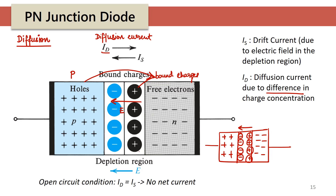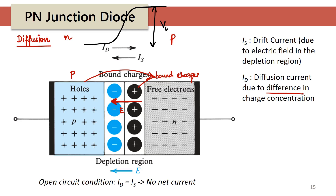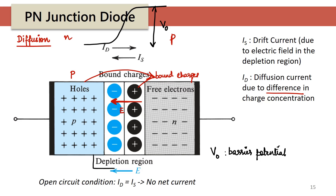There is literally a barrier between the two sides. Because there's an electric field between the two ends of the depletion layer, there will also be a difference in potential — V₀ — between the N-side and the P-side. This V₀ is called the barrier potential. This electric field arises because of the depletion of charges in this region, which is why it is called the depletion region, also known as the space charge region.